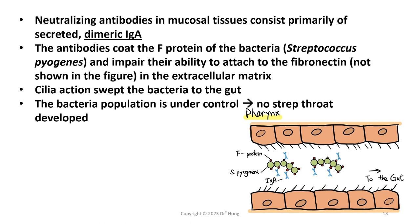Here is an example of strep throat, caused by the bacteria Streptococcus pyogenes. This Streptococcus pyogenes has antigens on the surface and other virulence factors. One of the most important virulence factors on Streptococcus pyogenes is something called F-protein. This F-protein on the bacteria has the ability to attach to something called fibronectin, which is in the extracellular matrix in the body.